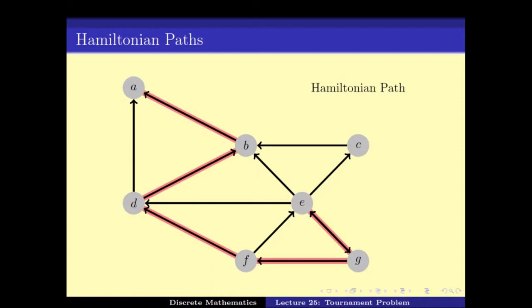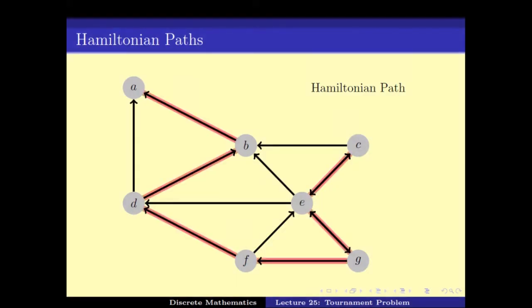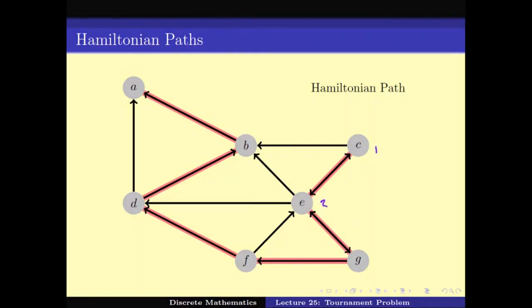But if we draw an edge from C to E, then we can have a Hamiltonian path: C, E, G, F, D, B, A. Note that the original labeling of the vertices is irrelevant. A Hamiltonian path is simply a path from some vertex to another where every vertex appears exactly once. We can renumber them first, second, third, fourth, fifth, sixth, seventh — the original labeling is not of importance.